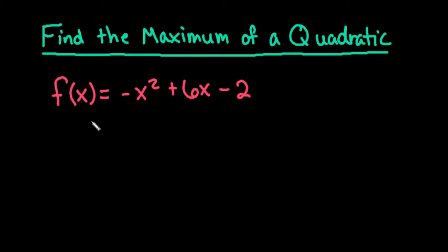The function that we have is f of x equals negative x squared plus 6x minus 2. And the way that I know that it's going to be a maximum is because there is a negative in front of x squared, which tells me that my quadratic function will open downward. So that yields a maximum point on our graph.